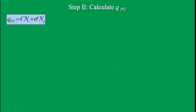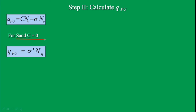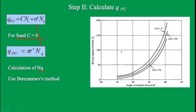In step 2 we calculate qpu. From part 3, the formula for qpu includes a cohesion term, but as the given soil is sandy, c = 0. So qpu simplifies to σ' × Nq. Next we calculate Nq using Berzantsev's method, which provides a chart. The inputs needed are the angle of internal friction phi and the L/d ratio.